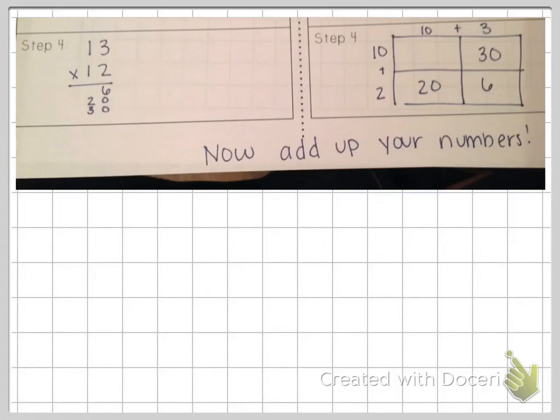Then our last step is to do ten times ten, and ten times ten is one hundred. So I've multiplied this ten by this ten, which is one hundred.